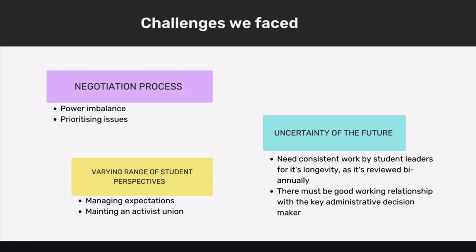Another challenge is uncertainty about the future from both student and university perspectives. From the student side, we're relying on every student who comes into a role to consistently work towards the SPA's outcomes. With even three years of disengaged student leadership, the SPA can easily become a forgotten document. It requires passionate, ambitious student leaders who want to continue the work and see the longevity of these initiatives. The SPA is reviewed annually so priorities can be updated to reflect current student issues — which is great — but that still requires student leaders to do that work and have those discussions.